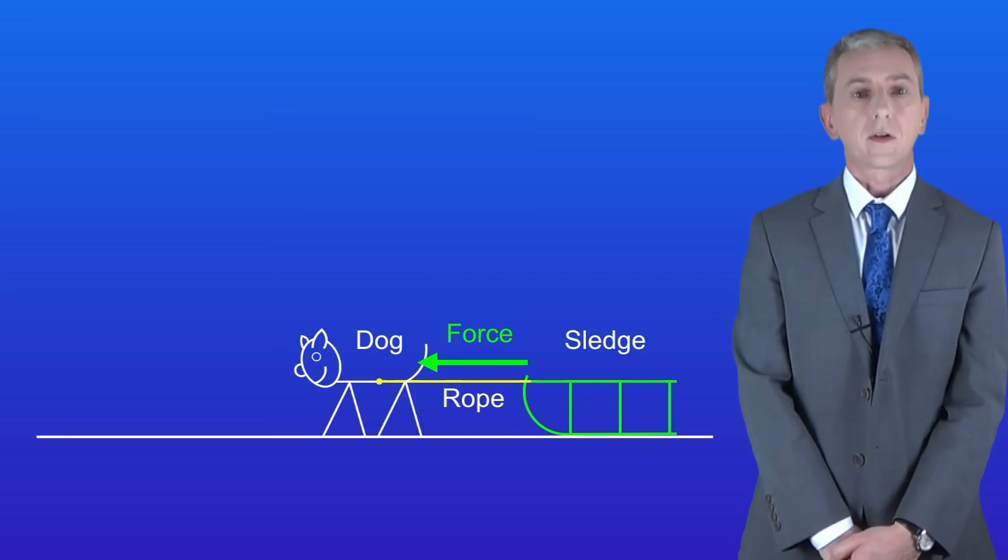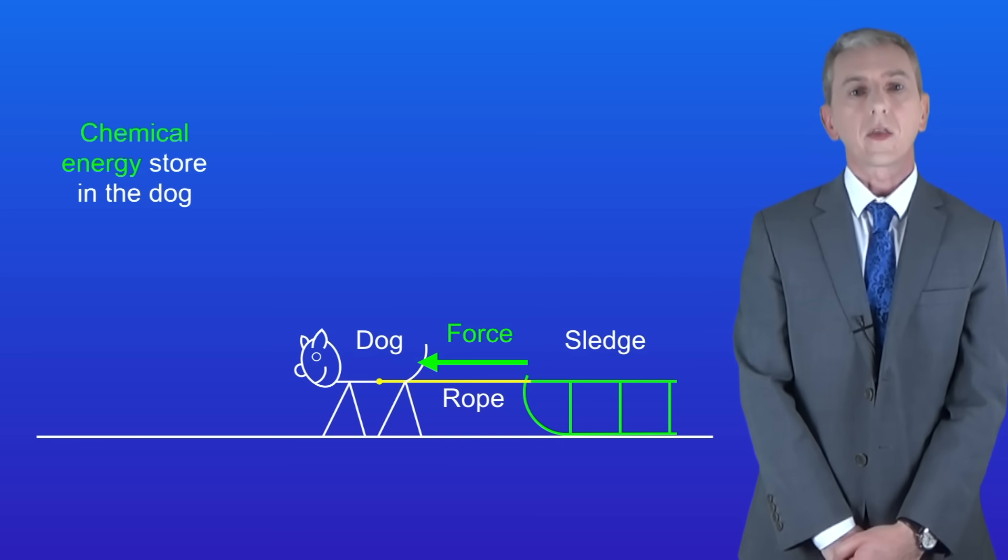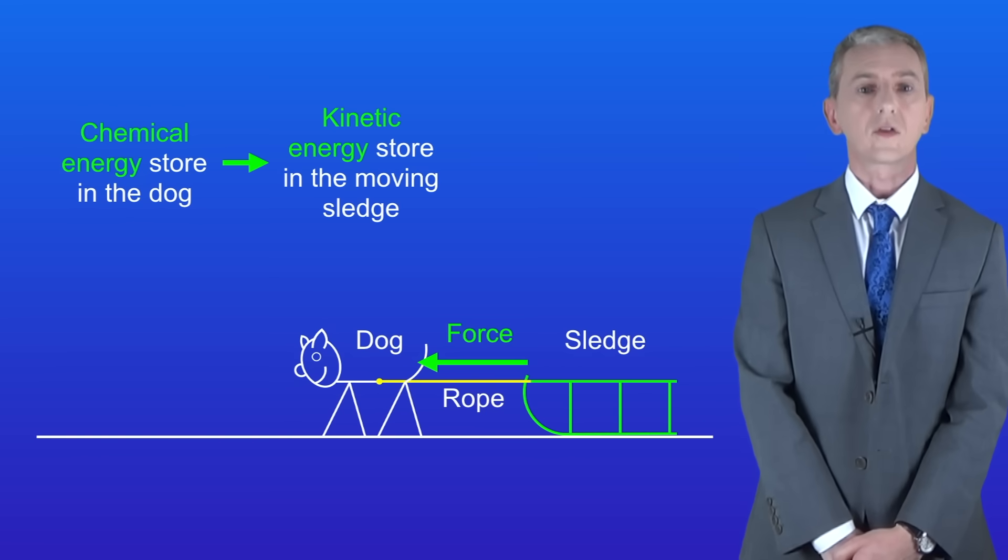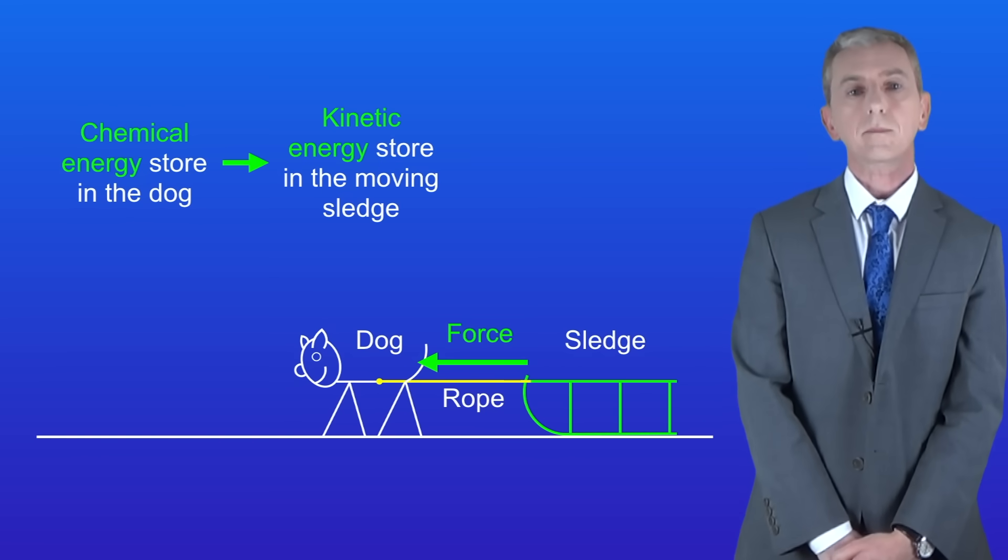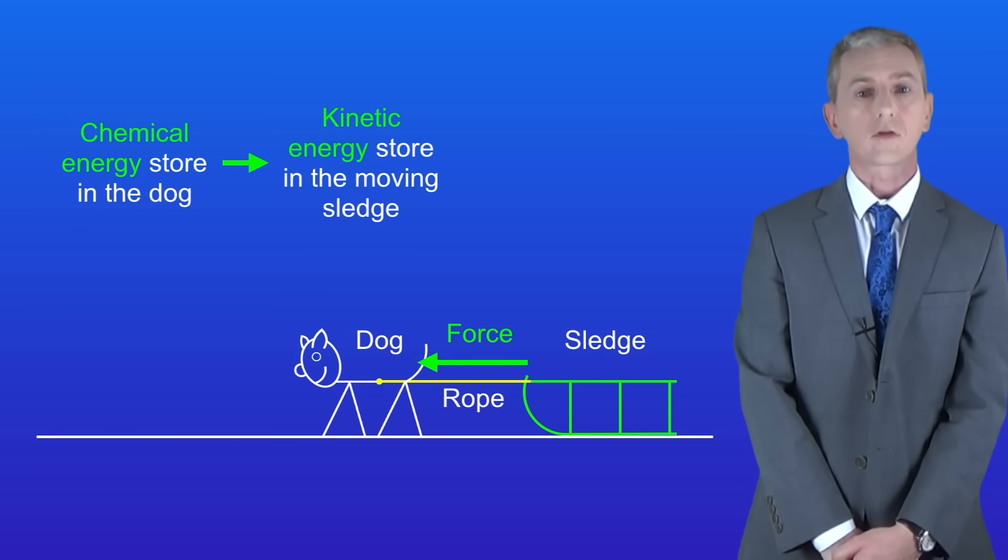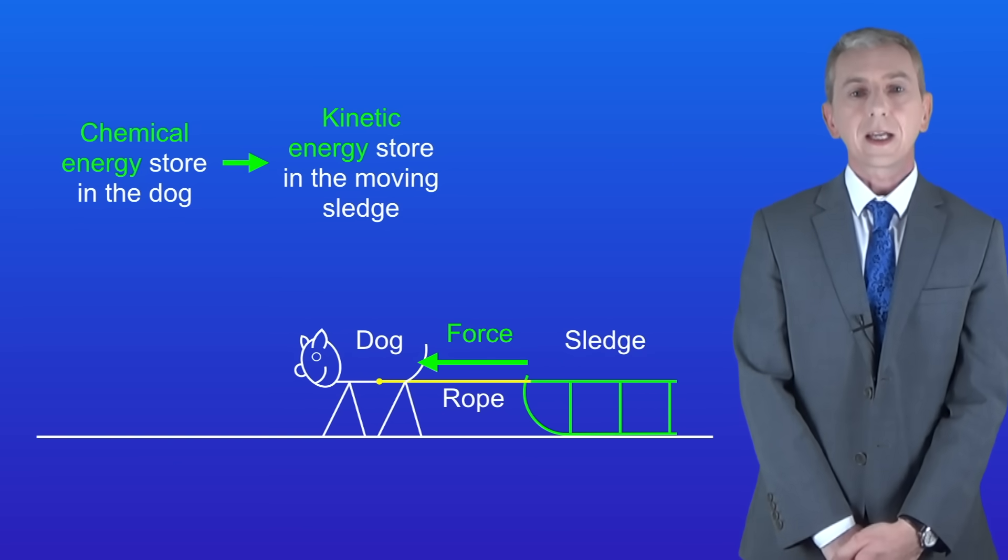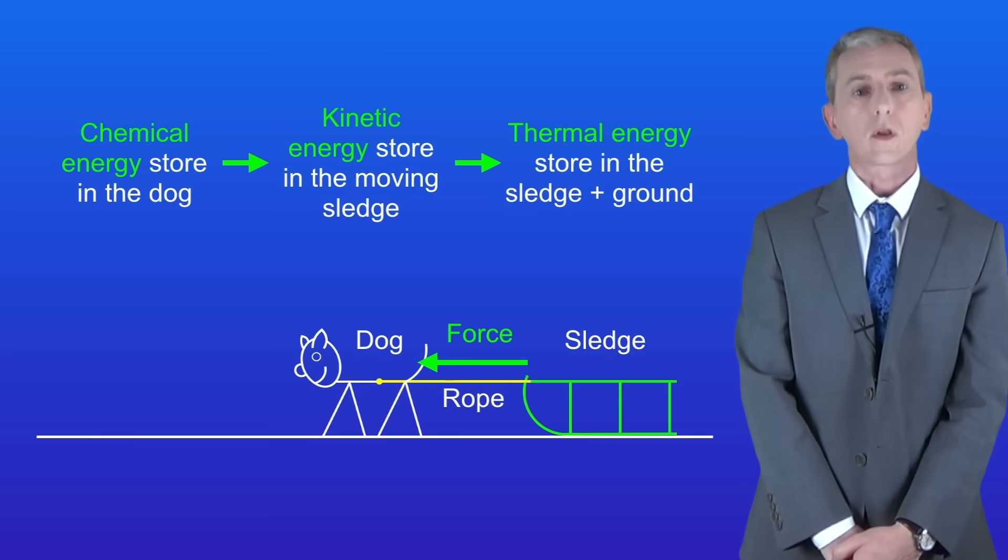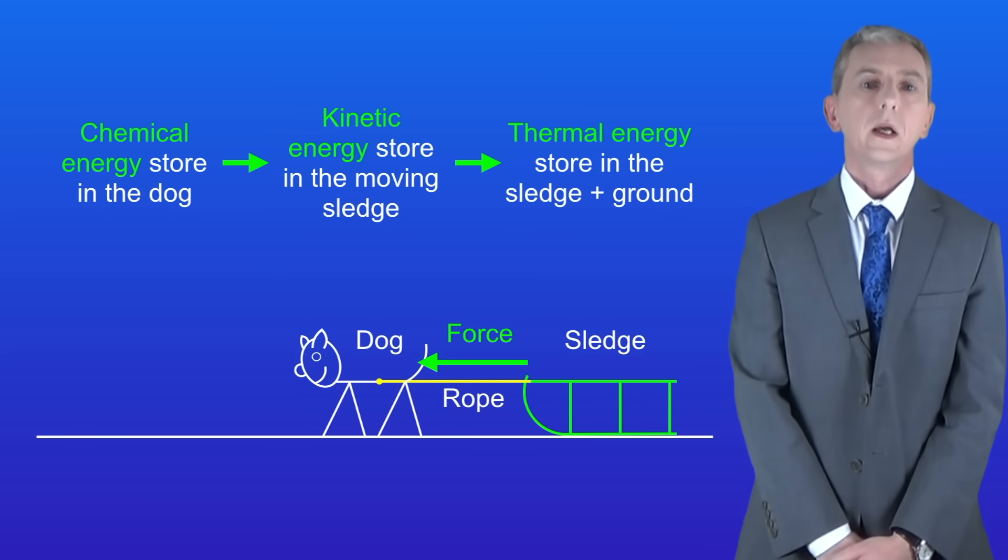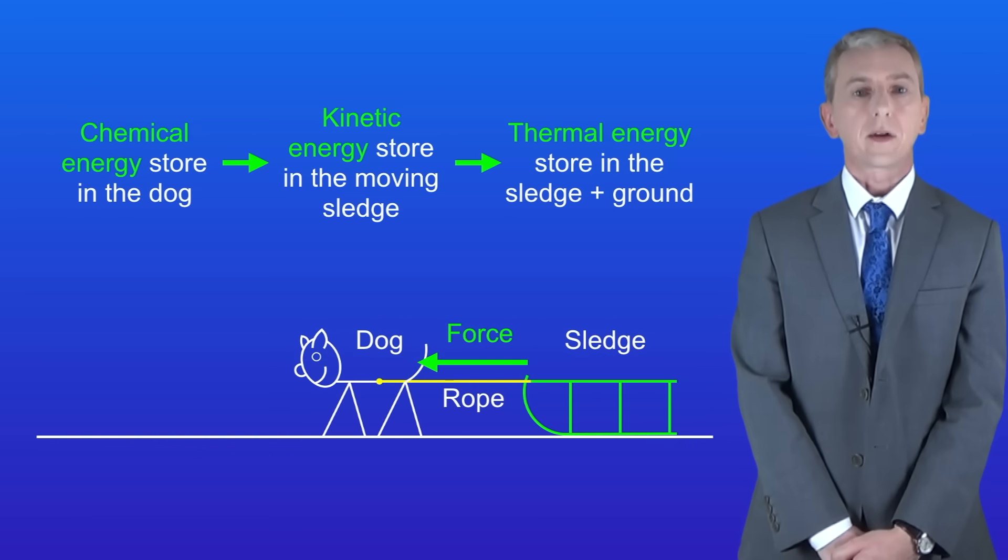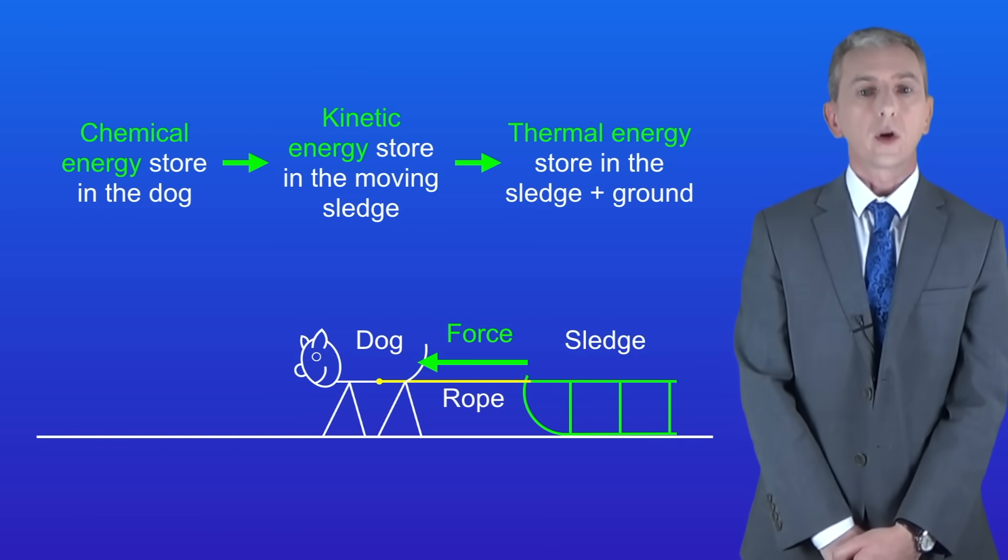So if we look at the energy transfers taking place we can see that the chemical energy store in the dog is being transferred to the kinetic energy store in the moving sledge. However the force of friction is now acting between the sledge and the ground. So some of the kinetic energy store is transferred to the thermal energy store in the sledge runners and in the ground. So as you can see we've got energy transfers taking place here between different stores and that means that work is being done.